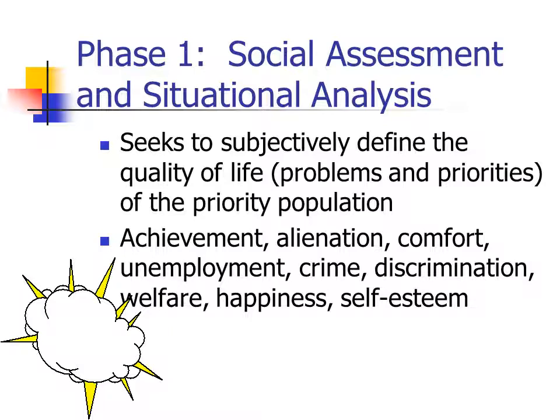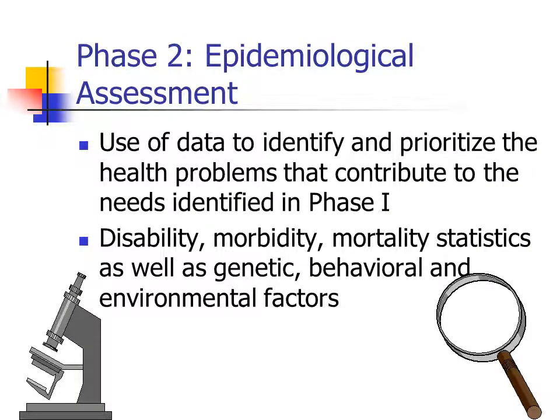The social assessment and situational analysis looks at quality of life, problems, and priorities of the priority population — things like crime, unemployment, welfare, level of happiness, and self-esteem. You can do surveys or look at existing data to tell the story about the community. Phase two examines epidemiological data: morbidity statistics, mortality statistics, and the incidence of chronic diseases like diabetes, cardiovascular disease, and obesity in that particular community. That helps convince people there's a need and that something needs to be done.